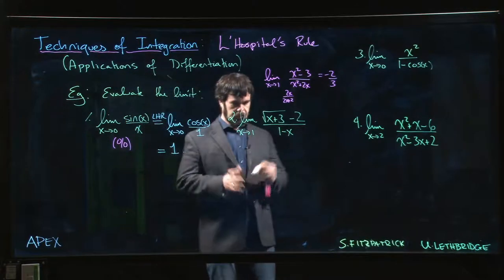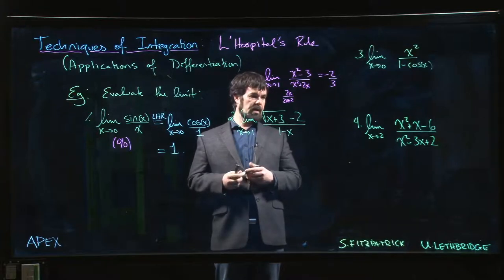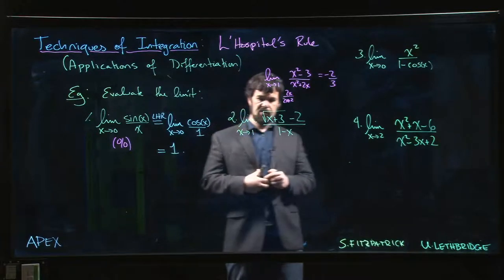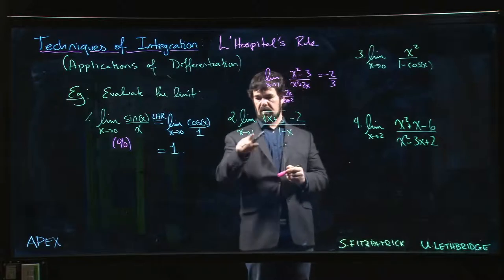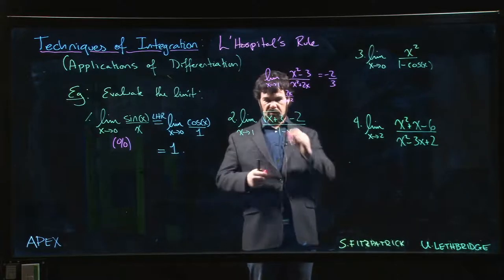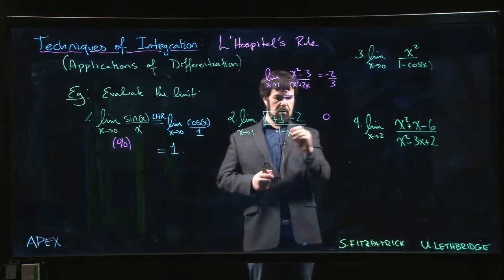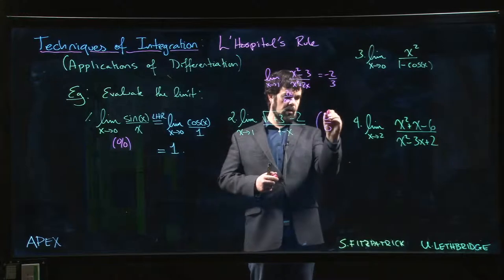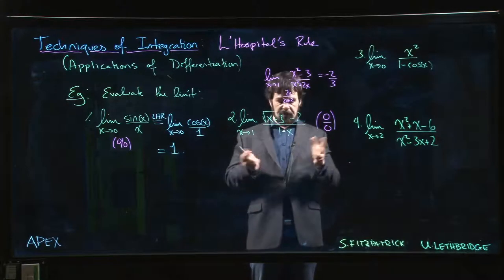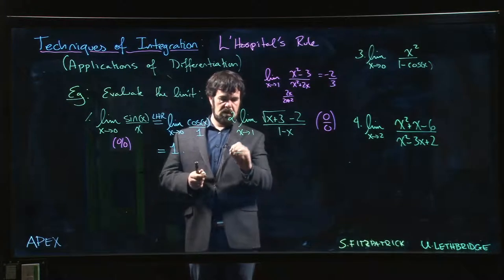Okay, come over to this one. Again, very first thing we need to check is: do we have a 0 over 0 limit? So if we put x equal to 1, we get 1 plus 3, 4, square root of 4 is 2 minus 2, so we definitely have 0 on the top. 1 minus 1, yes, okay, so it's 0 over 0. Having confirmed that it's 0 over 0, we can proceed.